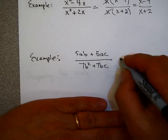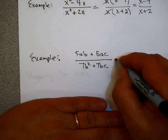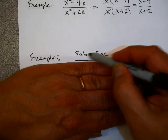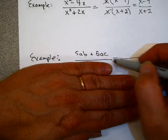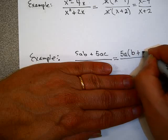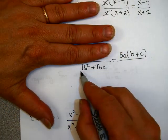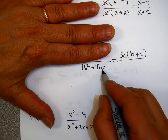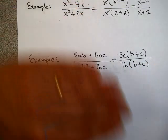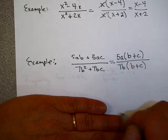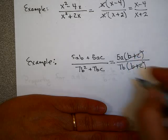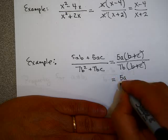How about (5ab+5ac) over (7b²+7bc)? Look at the numerator: 5 and a are common factors, leaving b plus c. For the denominator: 7b²+7bc is 7 times b times b and 7 times b times c, so I take out 7 and b, leaving b plus c. Since this is 5a times (b+c) over 7b times (b+c), the (b+c) factors divide out and your final answer is 5a over 7b.